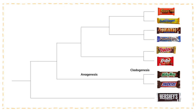Anagenesis is the evolution over time within a single species. Cladogenesis represents the splitting of a species or lineage into two different species, and is represented by two different branches coming from a single line. On this branch, we observe the evolution of the most recent common ancestor of Milky Way and Snickers until cladogenesis occurs.